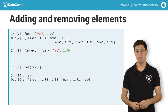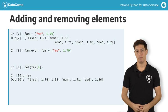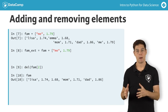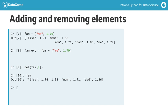If you now check out fam again, you'll see that the emma string is gone. Because you've removed an index, all elements that came after emma scooted over by one index. If you again run the same line, you're again removing the element at index 2, which is emma's height, 1.68 meters now.